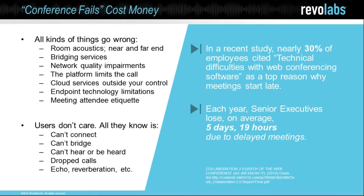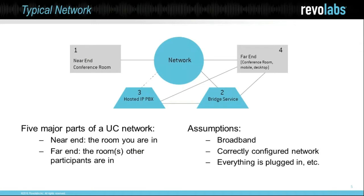There's a lot of anxiety around technology that, if you design rooms correctly, can really be alleviated. But the point about rooms is limited — we've got five components here that can give us problems, not just the room itself. There are a lot of points of failure. You have the near end, which is the room you're in, and the far end, where the people in other rooms are. That can be one room or many. We're assuming there is broadband internet, the network is configured correctly, phones are registered to the IP PBX, and everything's plugged in. Even when those things are all right, there are certainly other points of failure that can really hurt the user experience.